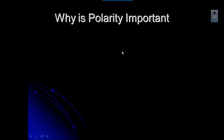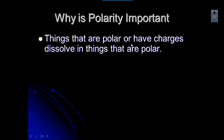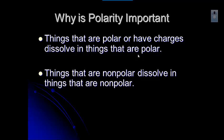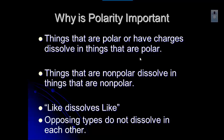Why do we care whether things are polar or not? Things that are polar — or have charges, like ionic compounds — can dissolve in things that are polar. Things that are non-polar dissolve in things that are non-polar. We say 'like dissolves like': polar dissolves polar, non-polar dissolves non-polar. Things that are different types do not dissolve in each other — polar things can't dissolve in non-polar compounds, and non-polar things can't dissolve in polar compounds.